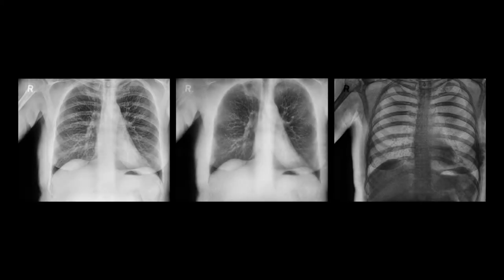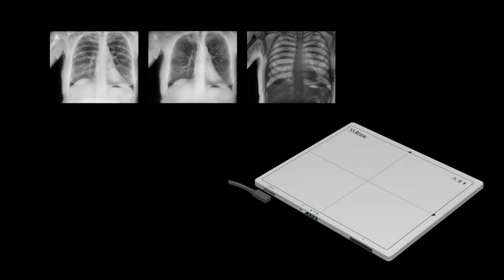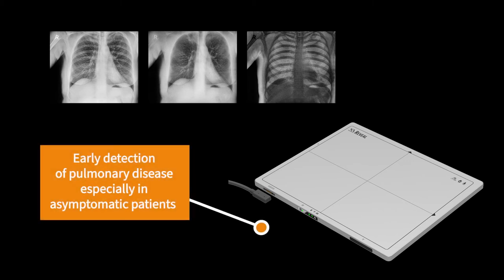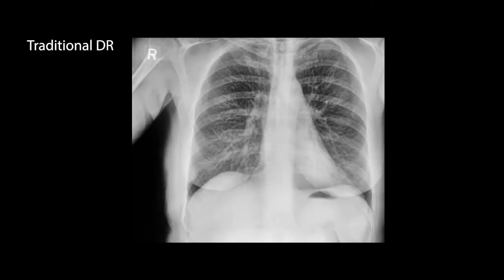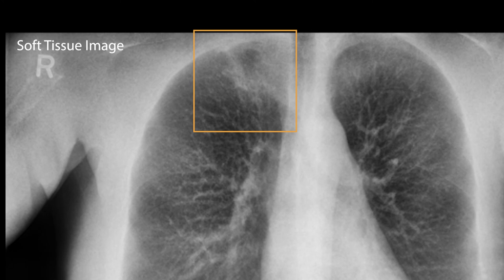This case highlights the possibility of using KA Imaging's Reveal device in place of conventional x-ray imaging for the early detection of pulmonary disease, especially in asymptomatic patients who are either not clinically indicated to receive a CT scan or lack access to a CT scan facility. To emphasize, the apical lesion in the right upper lobe that was missed in the conventional PA x-ray image became visible in the soft tissue dual energy x-ray image.